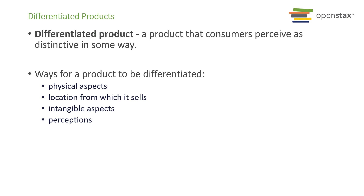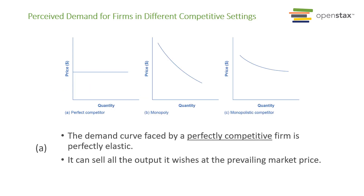We also see free entry and free exit in monopolistic competition, just like in perfect competition — companies can freely join or leave the market. Looking at the demand curve: in perfect competition, companies face a flat demand curve, meaning each company is a price taker. A downward sloping demand curve indicates a monopoly situation. Comparing monopoly to monopolistic competition, the monopolistic competition demand curve is more flat, indicating more elastic demand — consumers have choices.